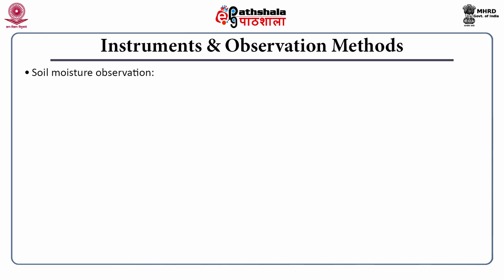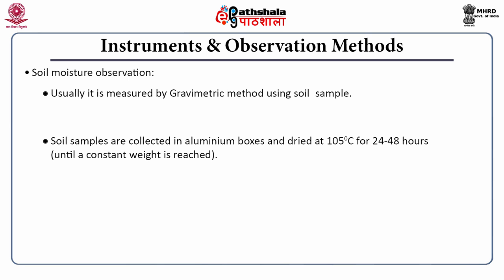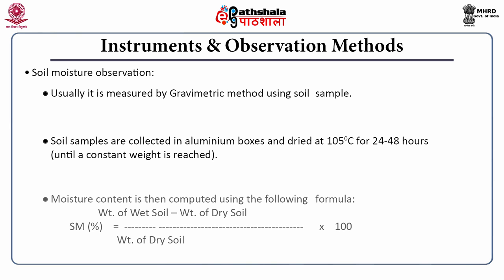Soil moisture observation is taken in most agrometeorological observatories and is usually measured by the gravimetric method. Soil samples are collected in aluminum boxes and dried at 105 degrees centigrade until a constant weight is reached. Generally, based on soil and moisture content, 24 to 48 hours are required to attain this constant weight. Moisture content is calculated using the formula: Soil moisture content (%) = [(weight of wet soil − weight of dry soil) / weight of dry soil] × 100.